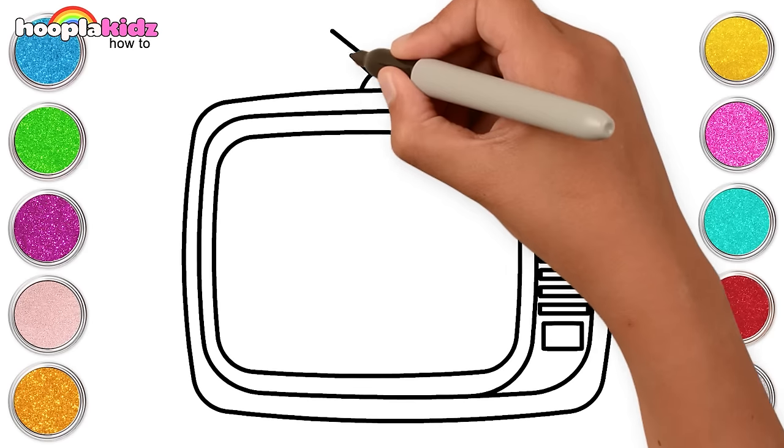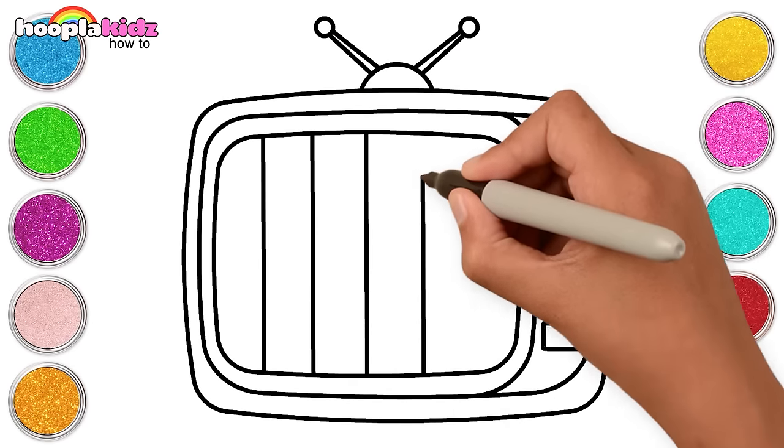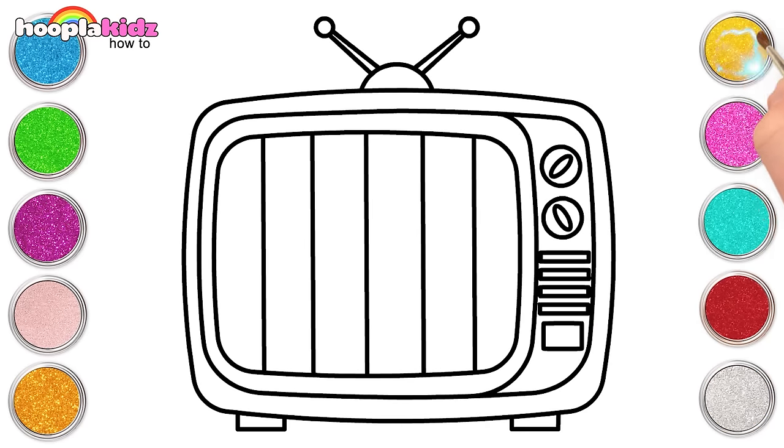We need to make an antenna for our TV. We need a picture on the TV too. Well, our sketch is ready! Let's color! Let's use yellow.